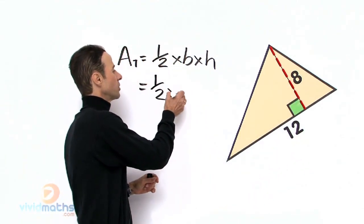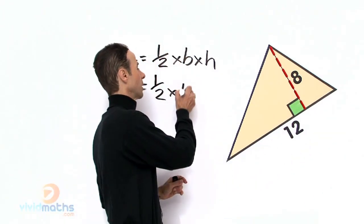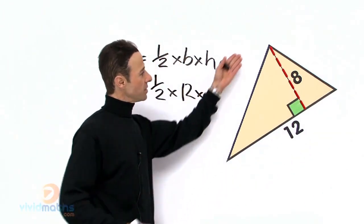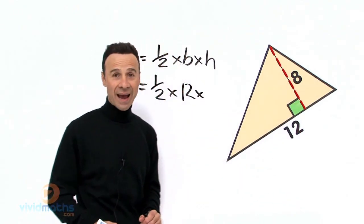We have one half times the base across here which is 12 and the height across there, the vertical perpendicular height from the base, is 8.